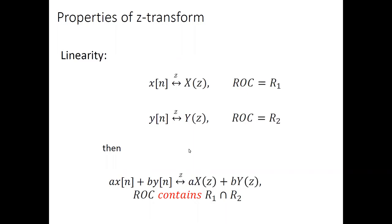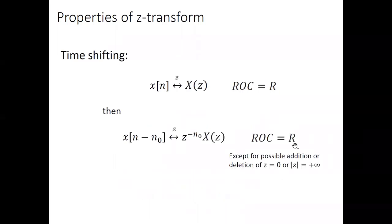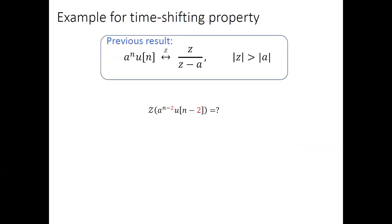Let's start our lecture today. Last lecture, we learned Z-transform: its motivation, its definition, the way to calculate Z-transform, the way to calculate its region of convergence (ROC). We also looked at a set of properties of Z-transform. The first one is linearity. The second one is time-shifting, where I mentioned that for time-shifting, the change of ROC might involve possible addition or deletion of z=0 or |z|=+∞. Let's use an example to illustrate the case with addition or deletion of z=0.